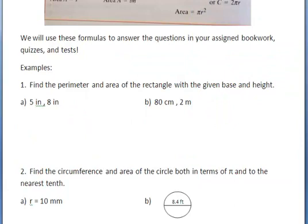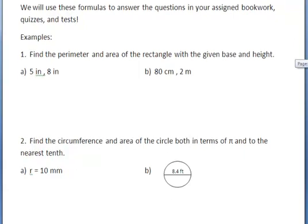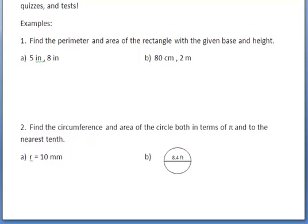Let me do these two examples with you — go ahead and pause the video to write these down, or use your note sheet. The first example says: find the perimeter and the area. So I have two answers. It's a rectangle with a given base and height — base equals 5 inches and height equals 8 inches.